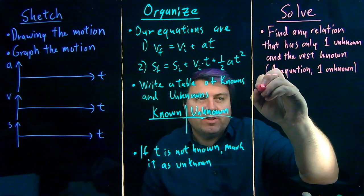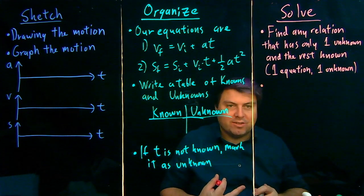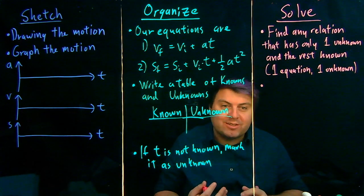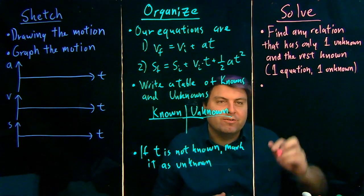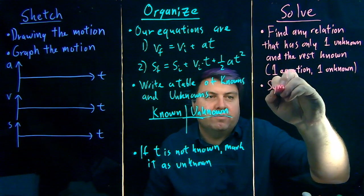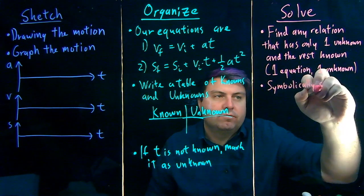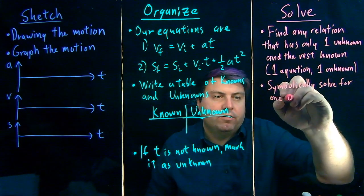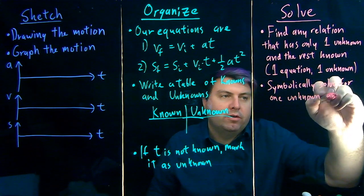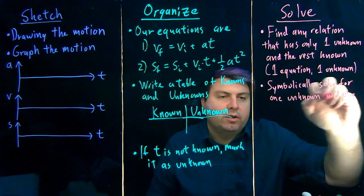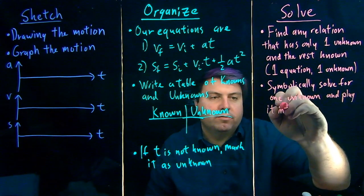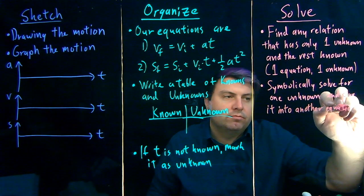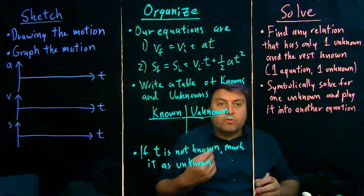If this doesn't happen, then we'll have to do what's called the simultaneous equation. We'll have to solve two different equations at the same time, except we don't really want to solve two different equations at the same time. What we want to do is symbolically solve for one unknown and plug it into another equation.